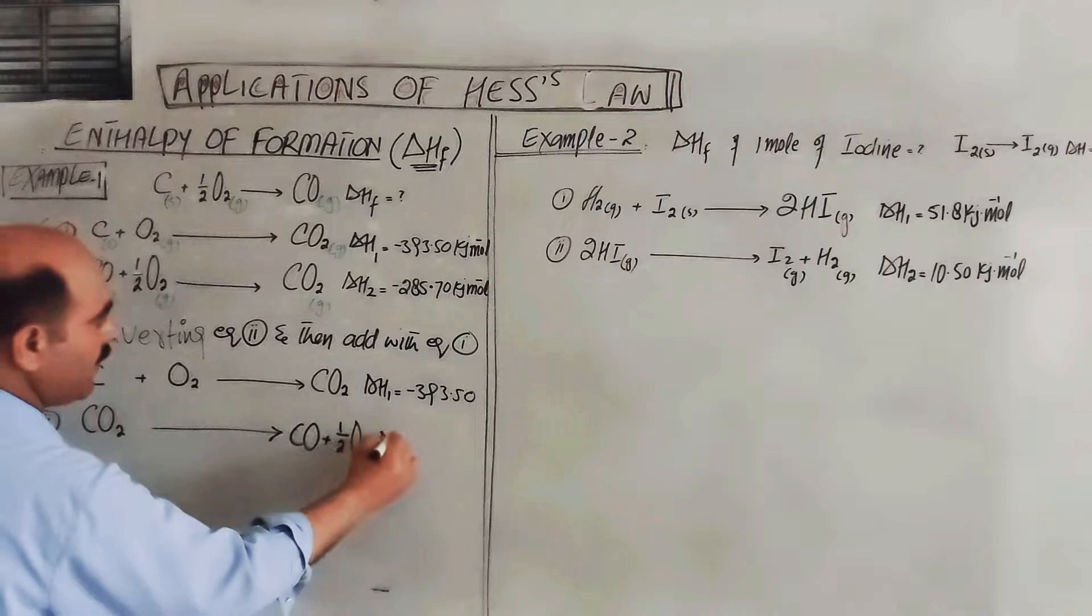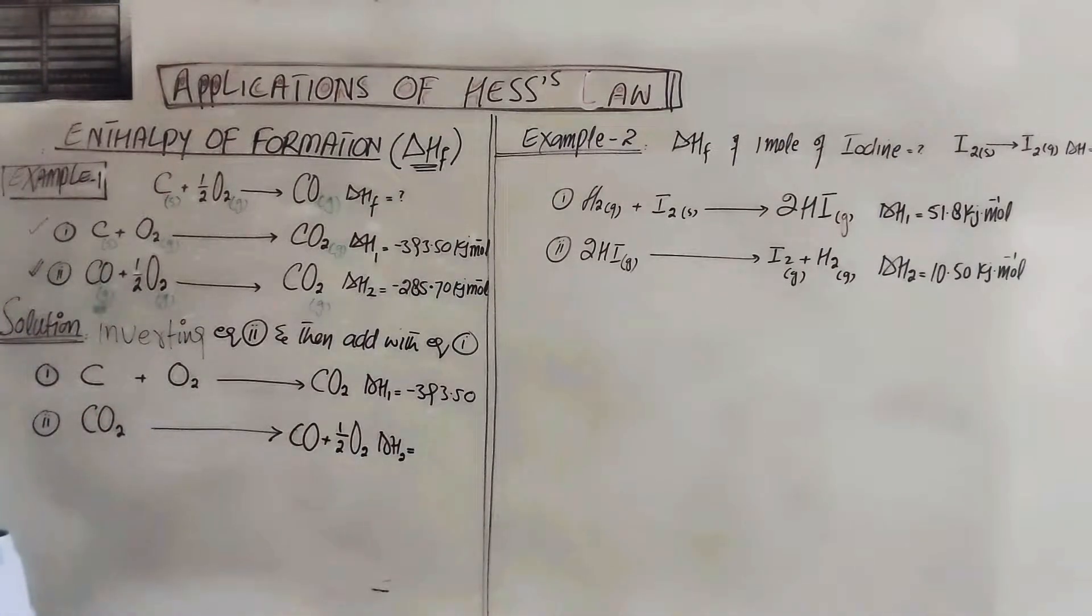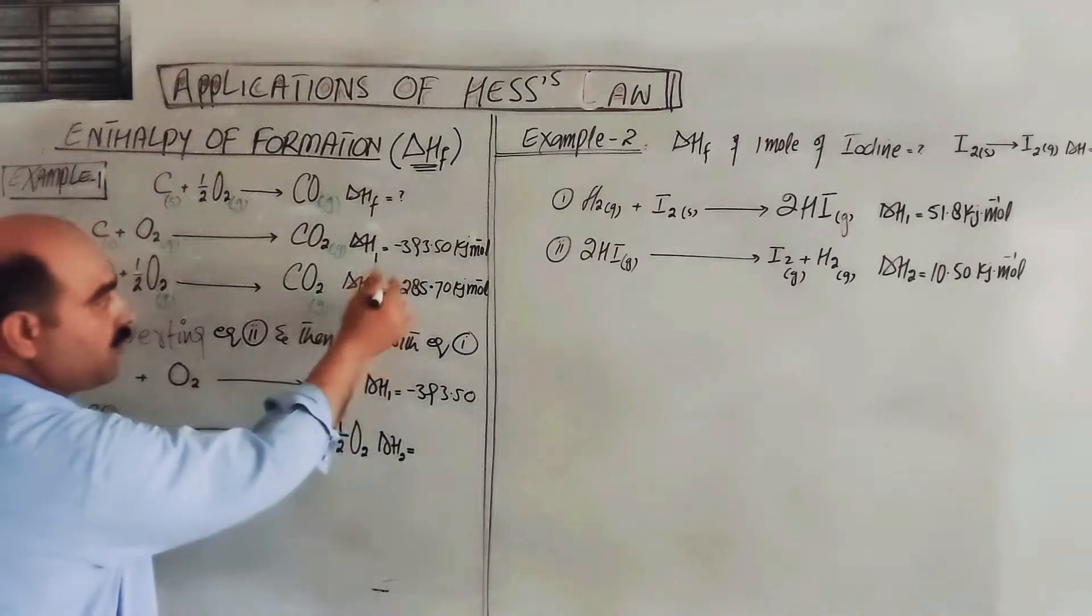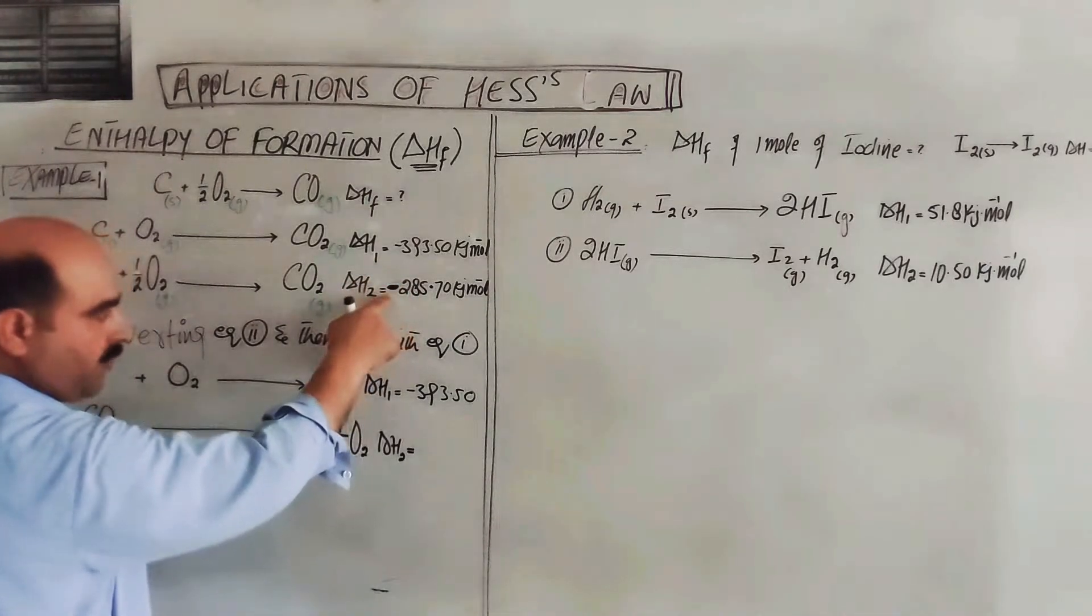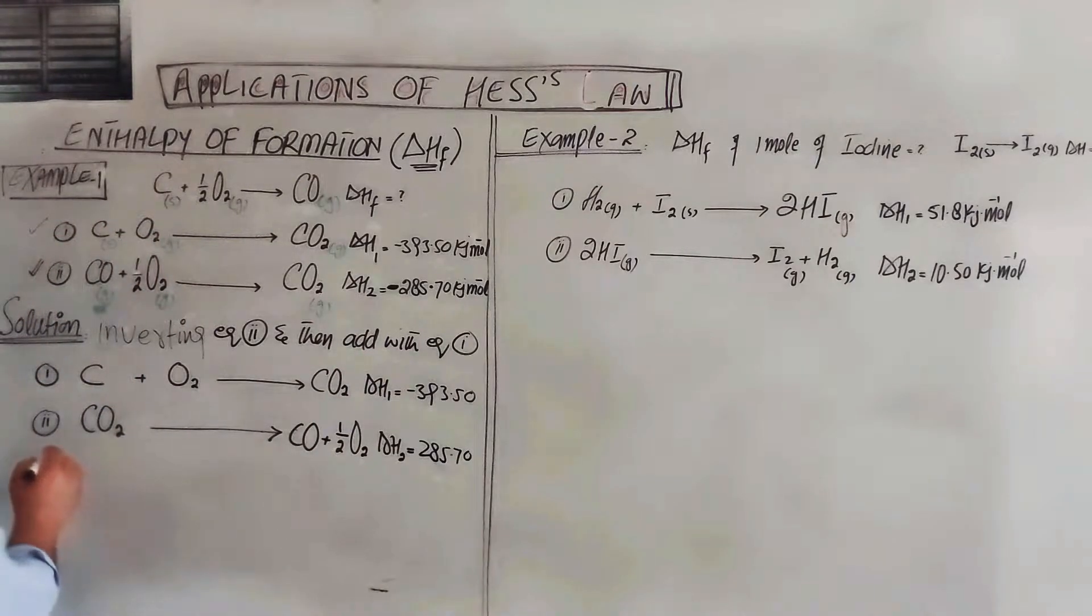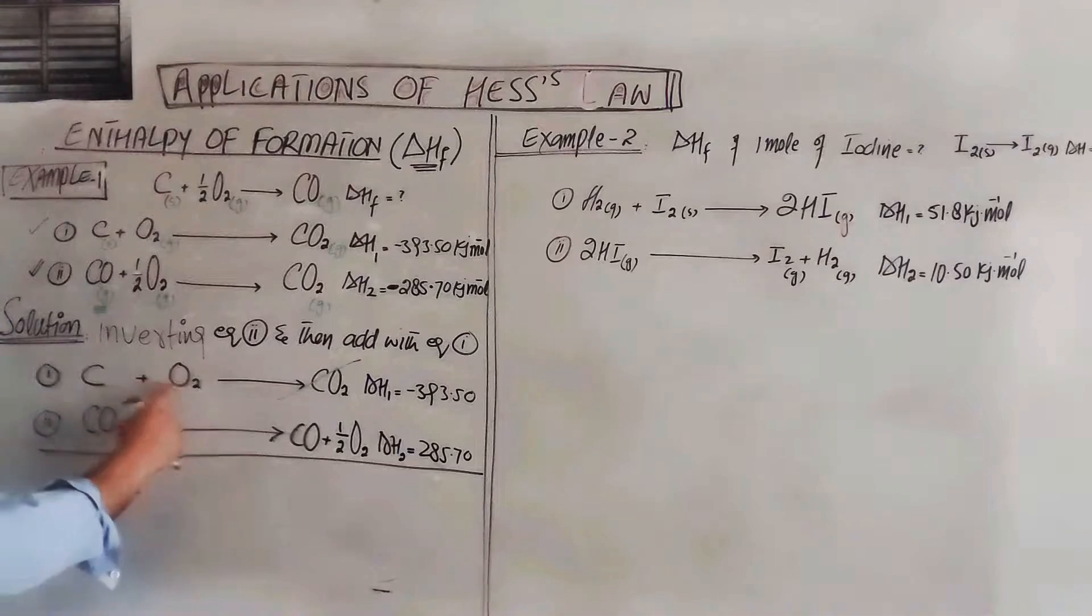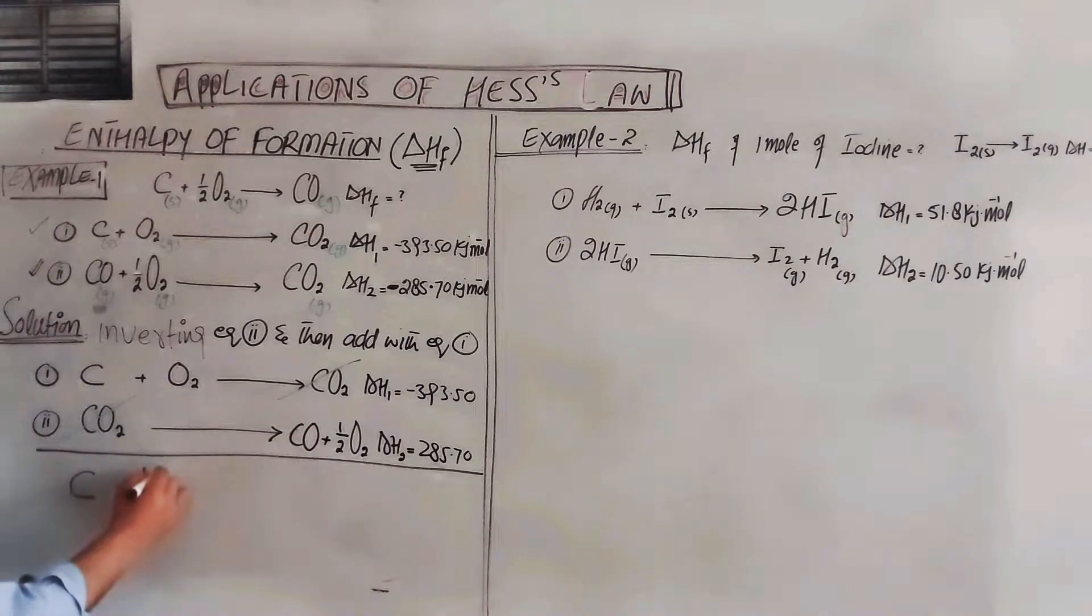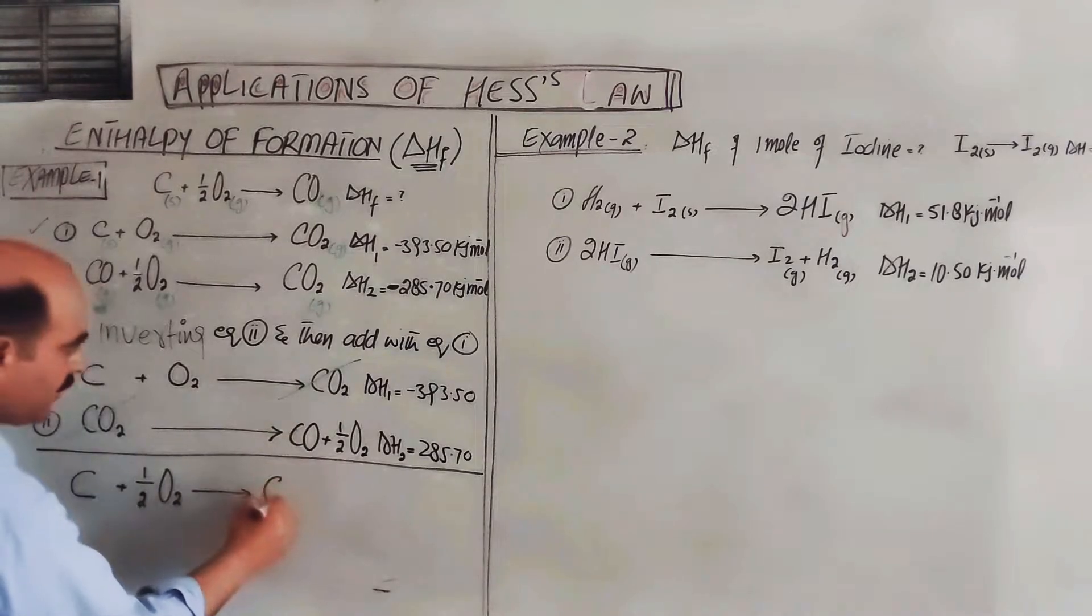We will reverse this. Carbon dioxide will come on the left. When it reacts, it gives carbon monoxide plus half mole oxygen. Second step delta H2 - most important, dear students: when we reverse the equation, the negative sign becomes positive. This is very important. Focus here. It will be plus 285.70 kilojoules per mole. Now we add this. When we add, common substances on left and right cancel. Carbon dioxide cancels with carbon dioxide.